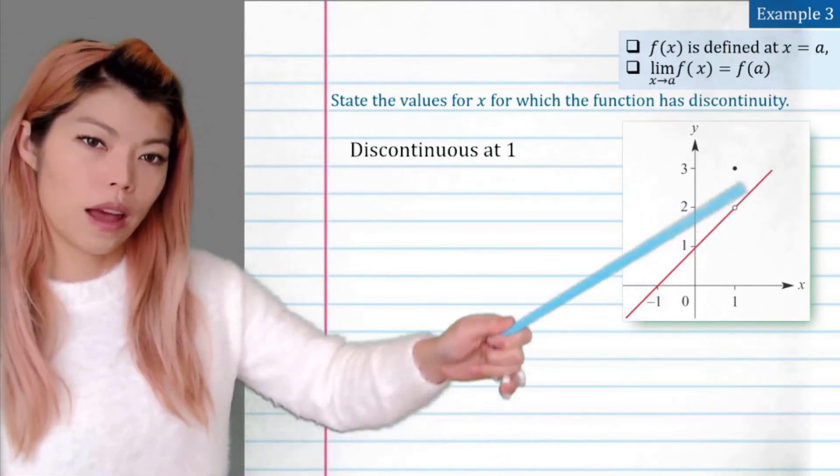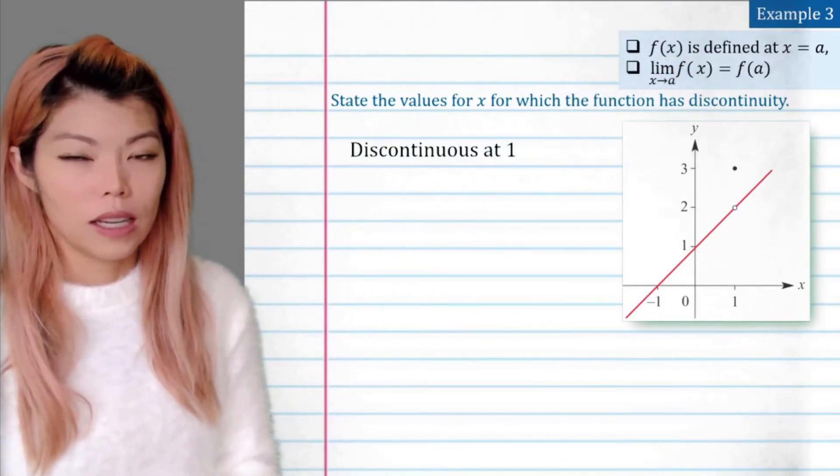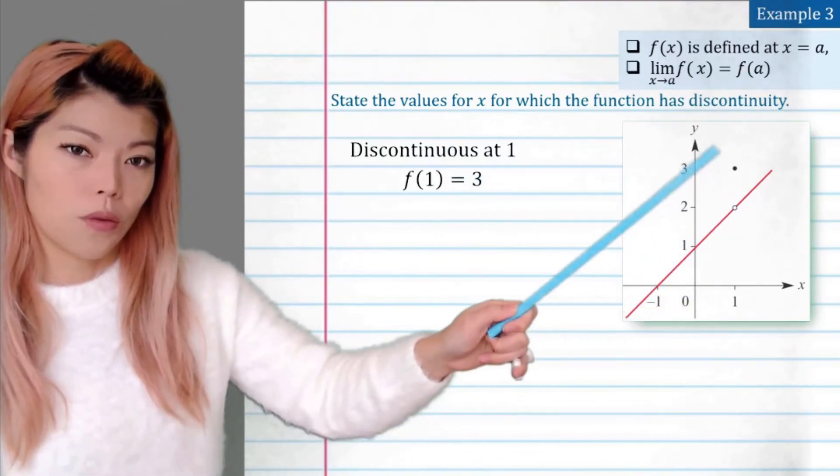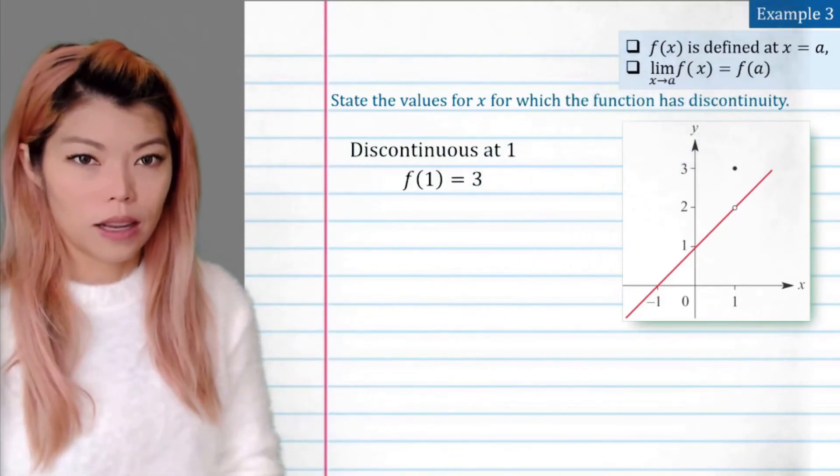But how do we prove that? We're going to use these two things. As long as one of them fails, then we have shown that it is discontinuous. So at 1, we can see that the y value is 3. So f of 1 equals 3. So the top line exists.